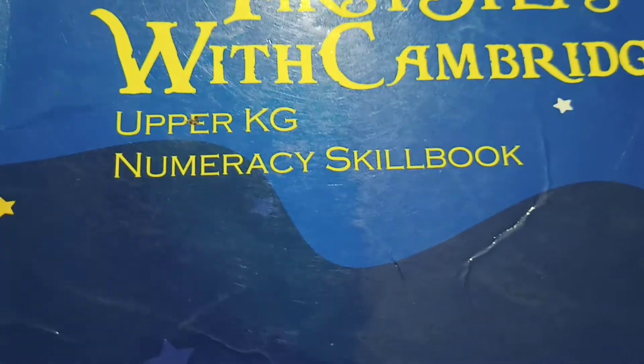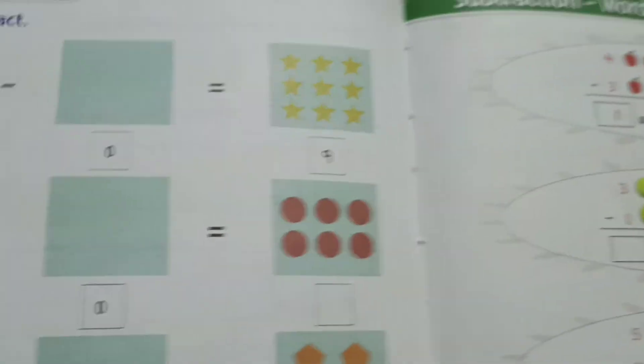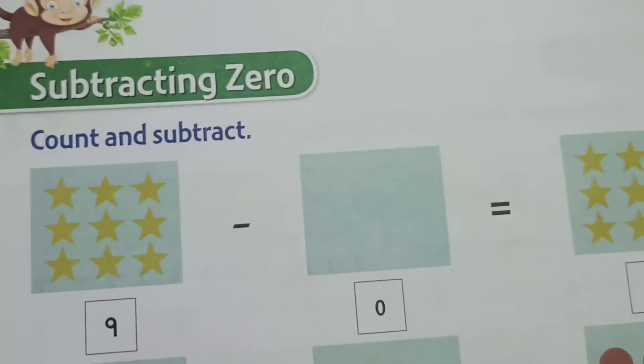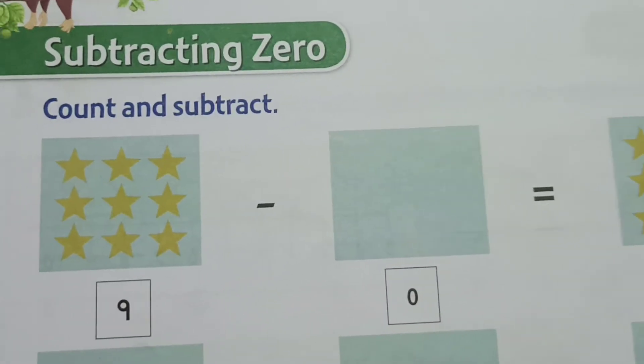Children, welcome to numeracy skill book, page number 108. Subtracting 0. Count and subtract.